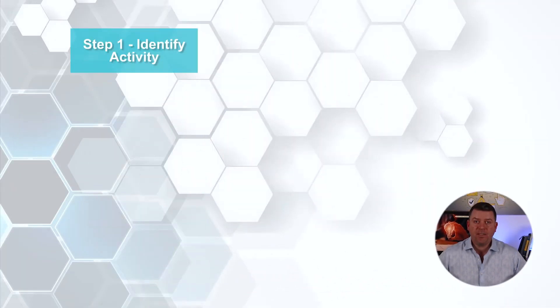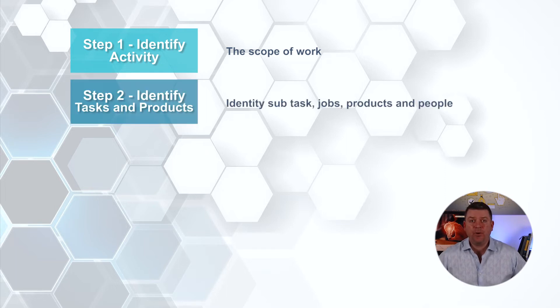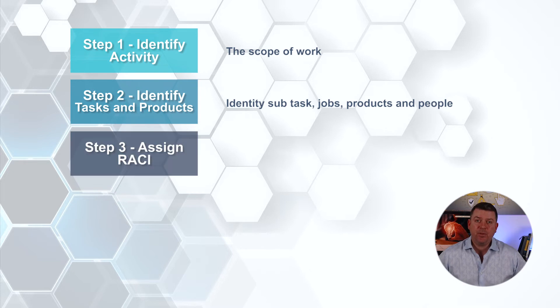The process for creating a RACI is relatively simple. The first step is to identify all the activities that you're seeking to include within the scope of the RACI itself. This scope can be as narrow or as broad as you need it to be — it could be at the highest commercial level, like a RACI for EMAI, sales and revenue, or really detailed, like subsections of the business case. Next, identify all the people, products and sub-tasks related to that activity. After this, assign the RACI elements to each task.